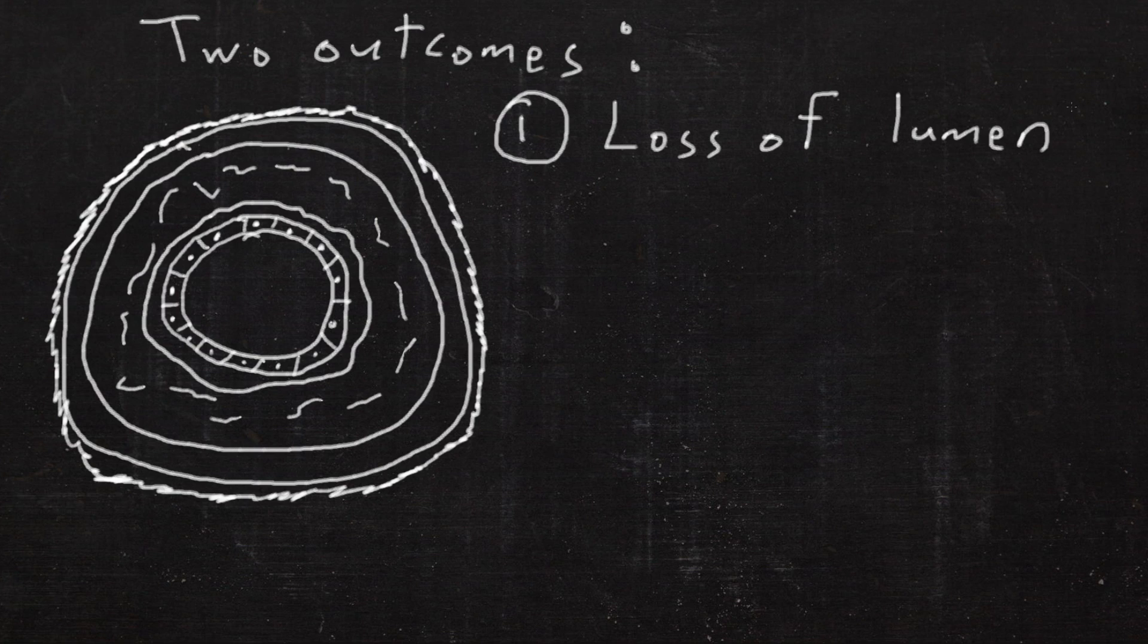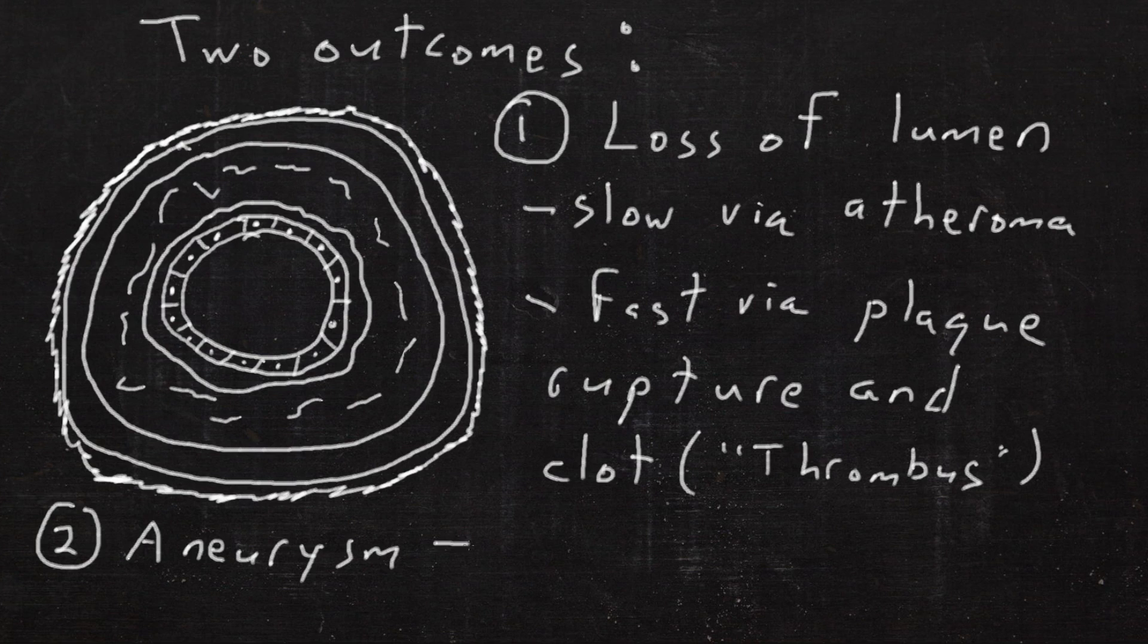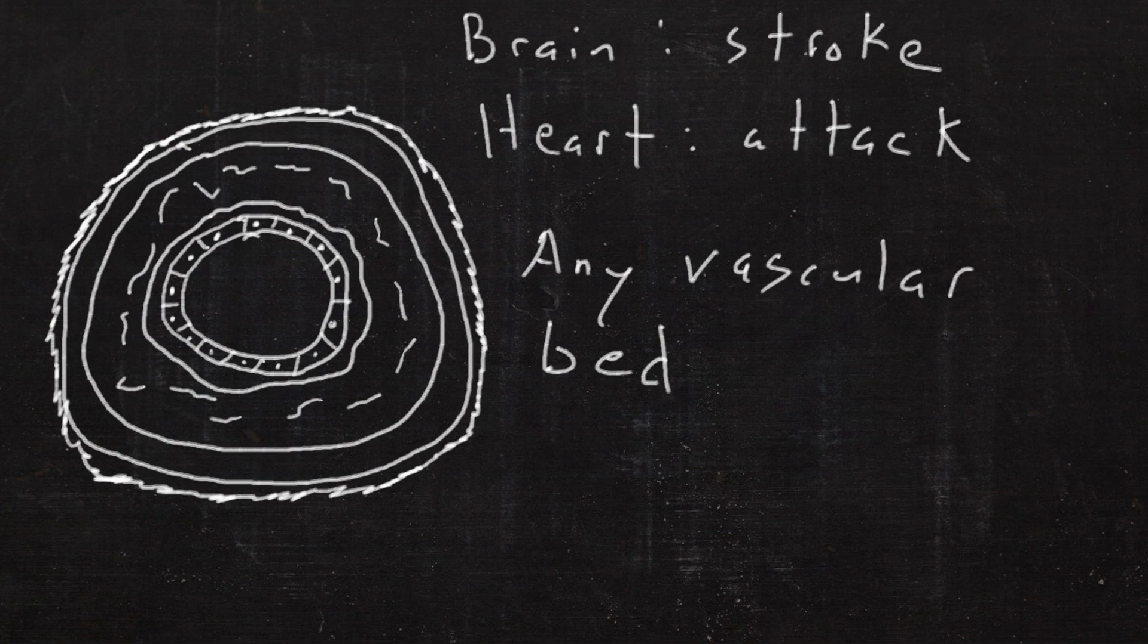There are two basic outcomes from these processes: loss of the lumen, either slowly by atheroma or fast via rupture and clot, and aneurysm, in which a fragile artery balloons. In the brain this is stroke, in the heart it's heart attack, but any vascular bed can be affected.